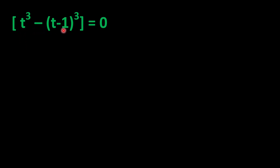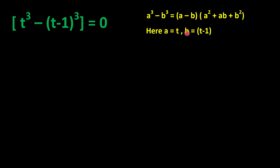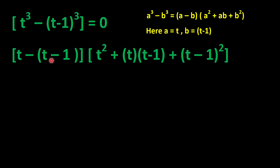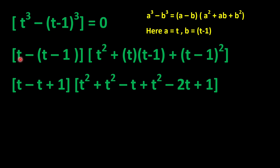For the first equation t^3 - (t-1)^3 = 0, we apply the cube difference formula: a^3 - b^3 = (a - b)(a^2 + ab + b^2), with a = t and b = (t-1). Expanding: (t - (t-1)) times (t^2 + t(t-1) + (t-1)^2). The first factor simplifies to t - t + 1 = 1.